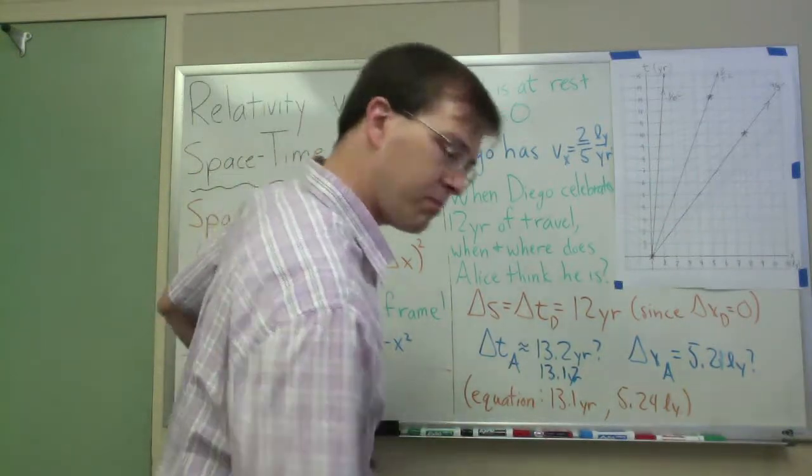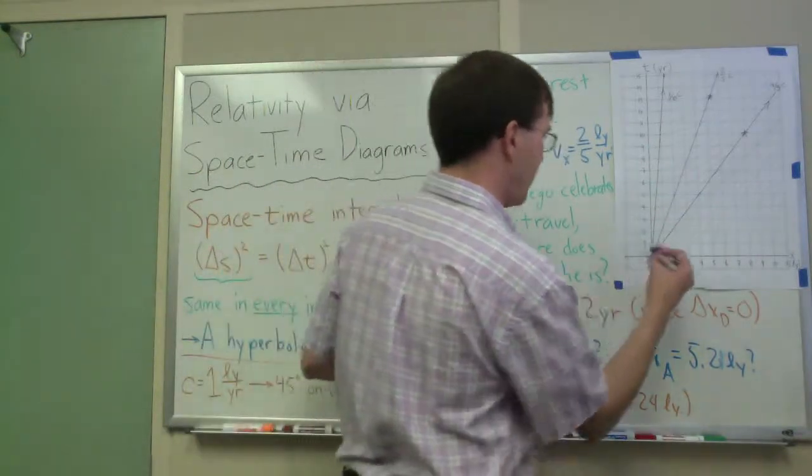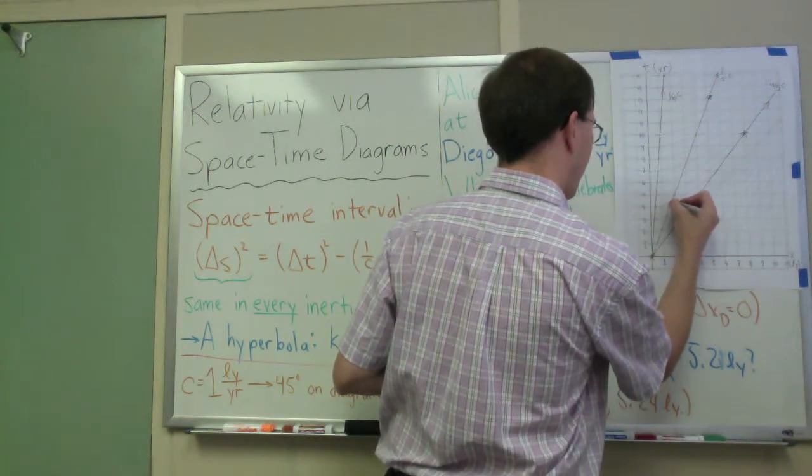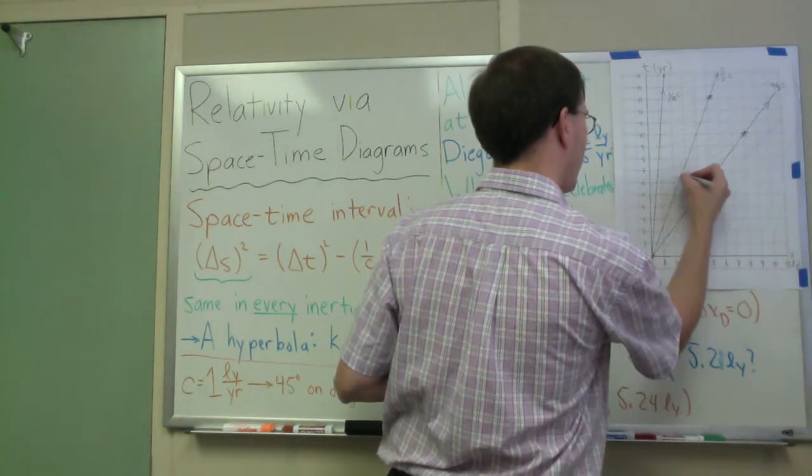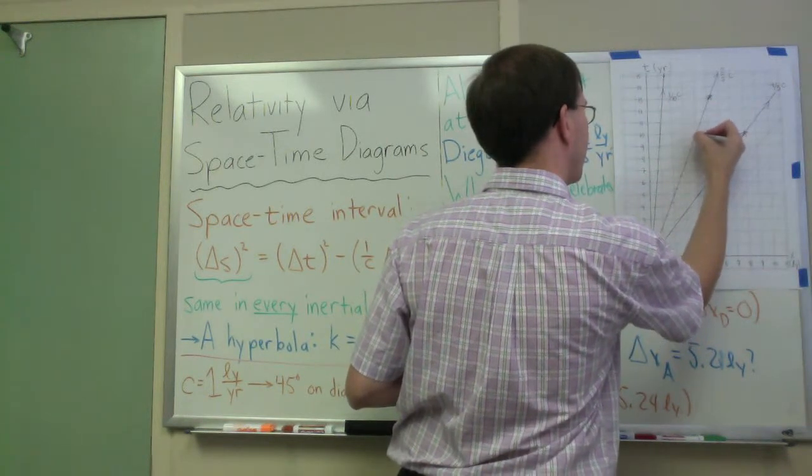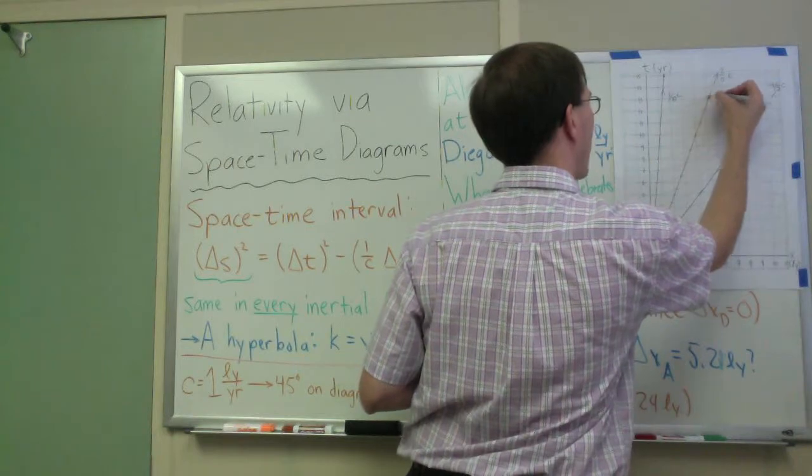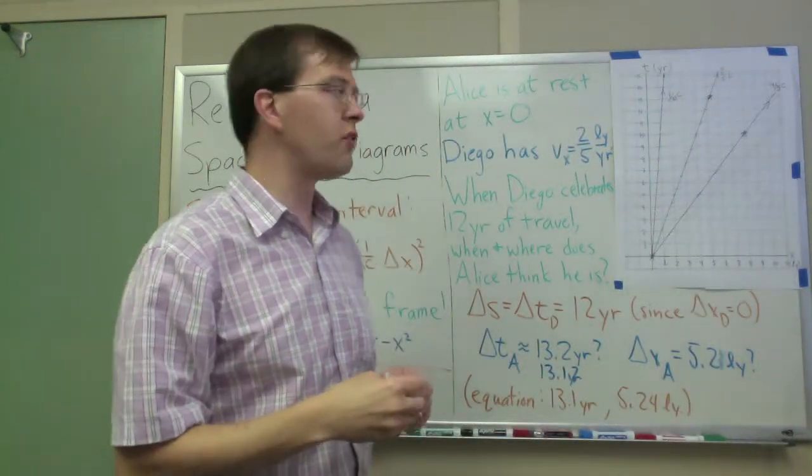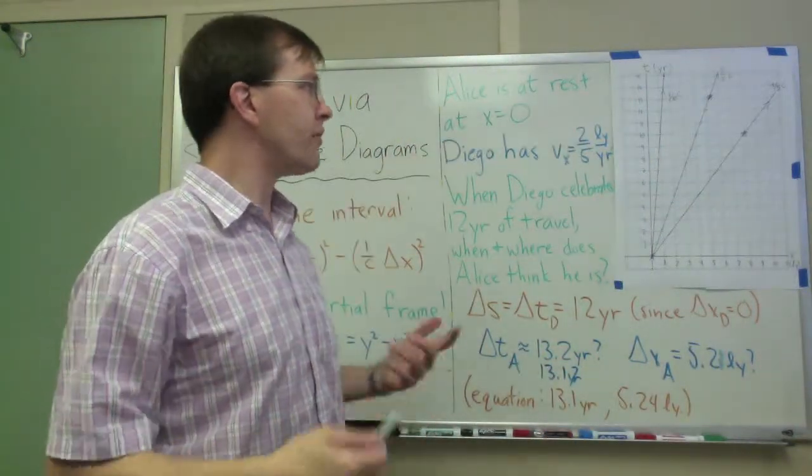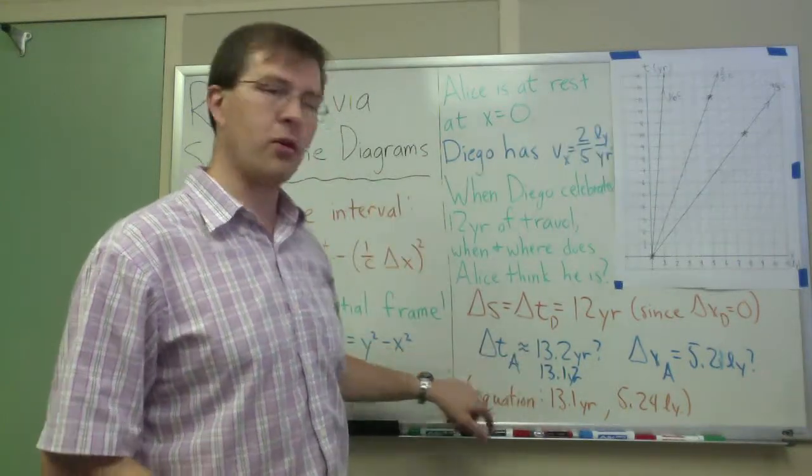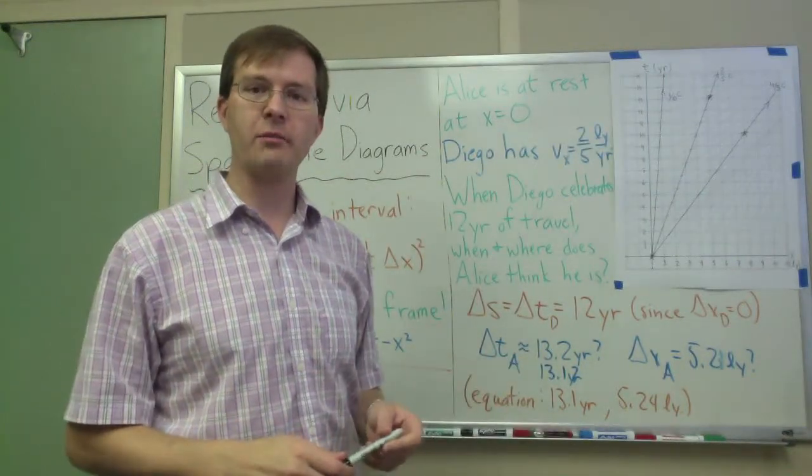One, two, three, every time he hits a hyperbola, five, six, seven, eight, nine, ten, eleven, twelve. Counting Diego's twelve birthdays going up there, we find, even just from this graph, very nice agreement with what you'd get using a full calculation, a mathematical calculation. I love these spacetime diagrams because they let us do this sort of thing.